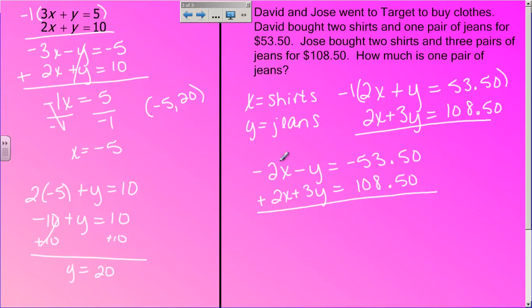Now these eliminate. So I can add these up. Negative 1 plus 3 gives me 2y. And when I add these up, I get 55.